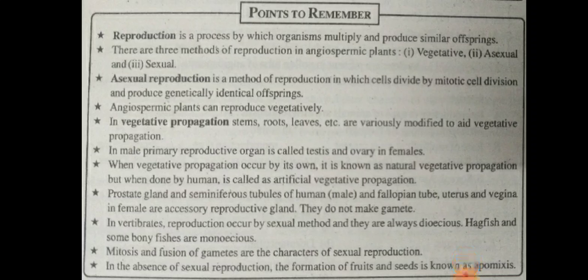Reproduction is a process by which organisms multiply and produce similar offspring. They produce their young ones for the continuity of life and existence of the species. There are three methods of reproduction in angiospermic plants.